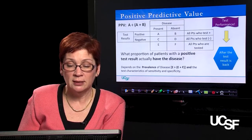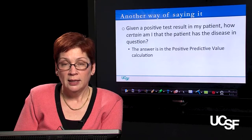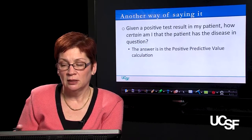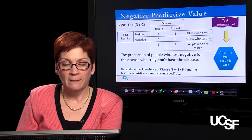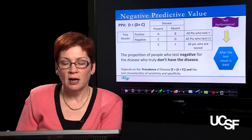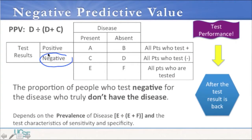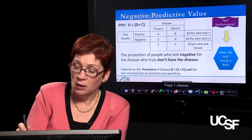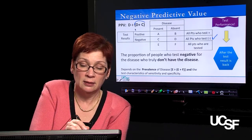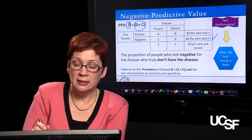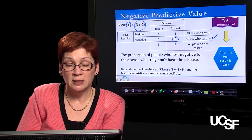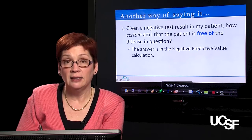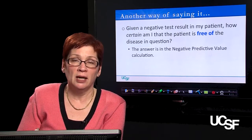Negative predictive value is the converse of positive predictive value — the proportion of people who test negative for the disease who truly don't have it. The formula is D over D plus C, where C plus D is all patients who test negative as the denominator, and D — true negatives — is the numerator. In other words: given a negative test result for my patient, how certain am I that the patient is free of the disease in question?